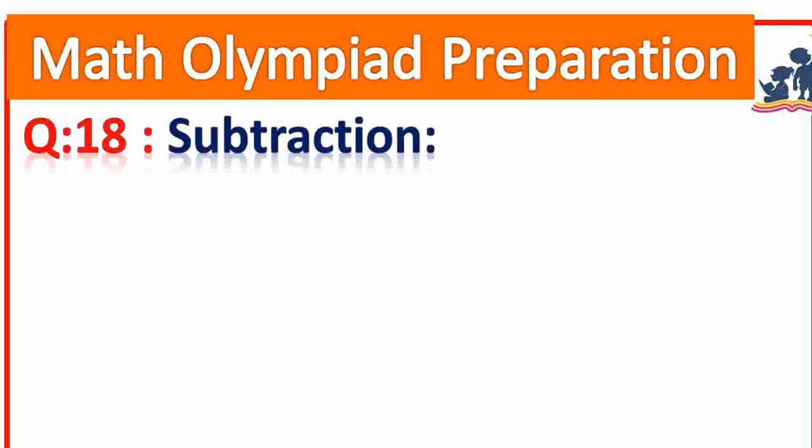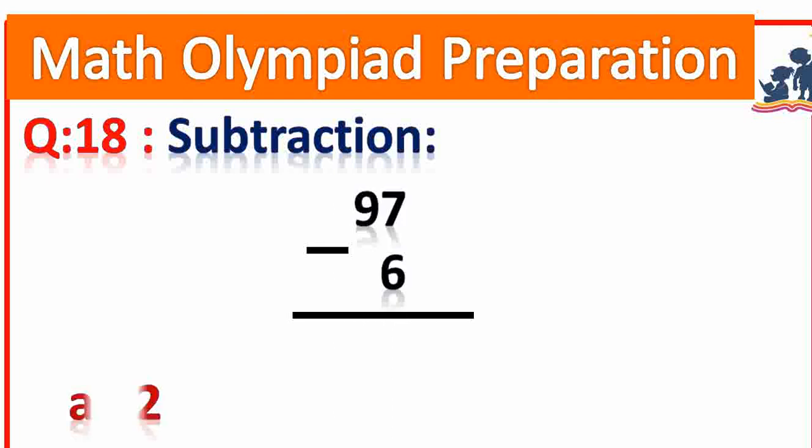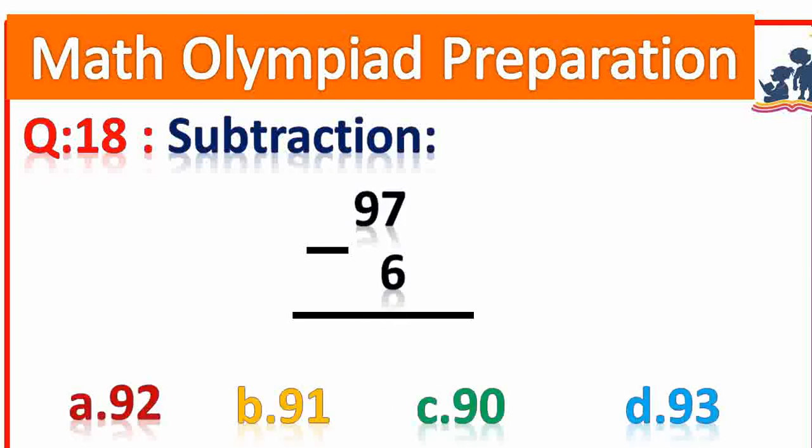Question number 18. Subtraction: 97 minus 6 is equal to how much? 91. Very good.